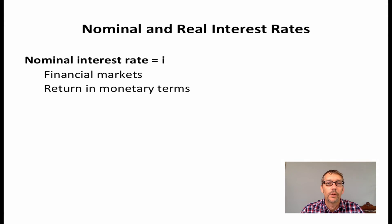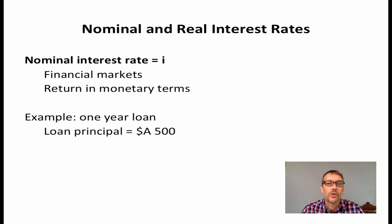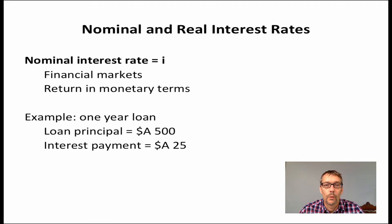Consider the example of a one-year loan. The amount of the loan, or principal, is $500 Australian dollars. At the end of the year, the loan principal is repaid along with an interest payment of $25 Australian dollars. We can calculate the nominal interest rate on the loan in the following manner.